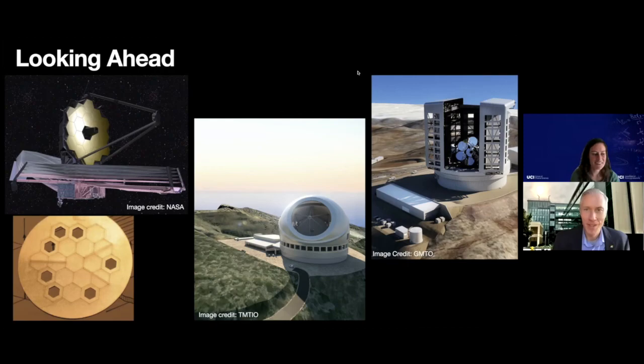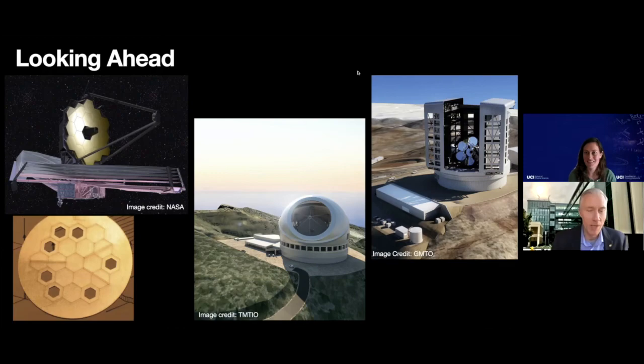We'll try to do one final question as people hopefully stick around one extra minute. It's about future telescopes. One question is: you mentioned this with JWST — how are these aperture masking technologies influencing future telescopes and future designs? And maybe quickly: people are asking where these big telescopes are going to be. We don't know exactly where TMT is going to go yet.